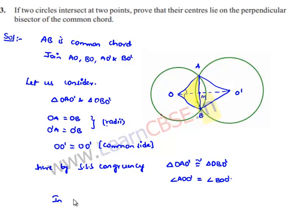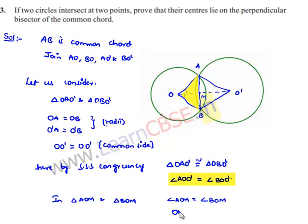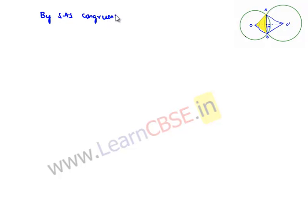Now let us consider the other two triangles, that is triangle AOM and triangle BOM. In these two triangles, angle AOM is equal to angle BOM as proved above, and OM is equal to OM since it is a common side, and OA is equal to OB since they are radii of the circle with center O. Therefore, by the SAS property, we can say both the triangles are congruent. That is, triangle AOM is congruent to triangle BOM.